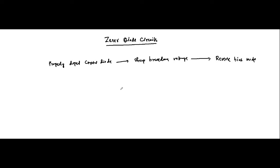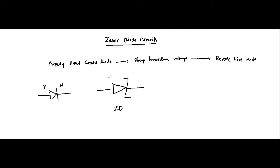The general symbol of a Zener diode is something like this — this is a Zener diode. Whereas a normal diode is like this, with the P-end and the N-end. Where a normal diode can be connected in both forward and reverse bias mode, the Zener diode is always connected in reverse bias mode. Normally, when it is connected in forward bias mode, it will always be off.